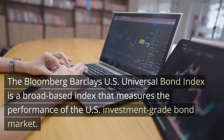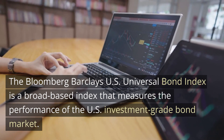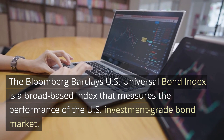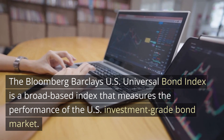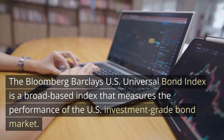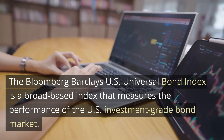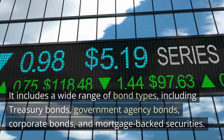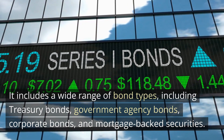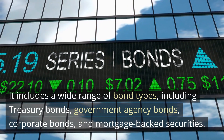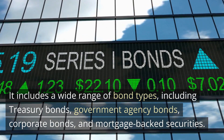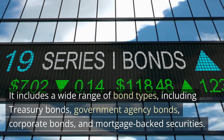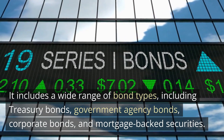The Bloomberg Barclays U.S. Universal Bond Index is a broad-based index that measures the performance of the U.S. investment-grade bond market. It includes a wide range of bond types, including treasury bonds, government agency bonds, corporate bonds, and mortgage-backed securities.